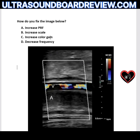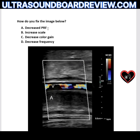If the options didn't include 'increase color gain' and instead said 'decrease color gain,' which option would you choose? You would choose decrease PRF — that would obviously make the vein more aliased.